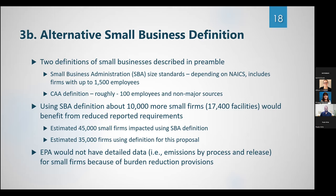Another question asks whether we have identified which industries are likely to be affected for small businesses. In the preamble, we discuss an analysis done to estimate the number of entities by NAICS code, and that information is included in the docket. So that information is available by NAICS, at least based on our estimated approach.